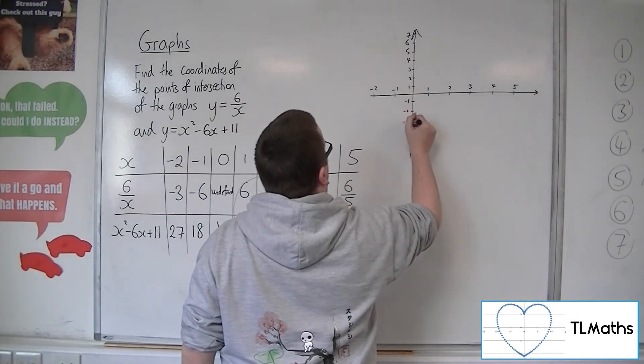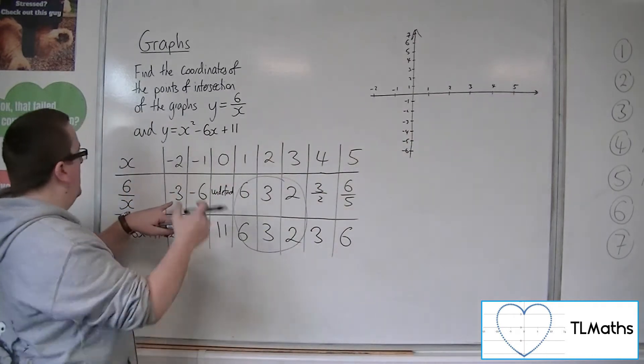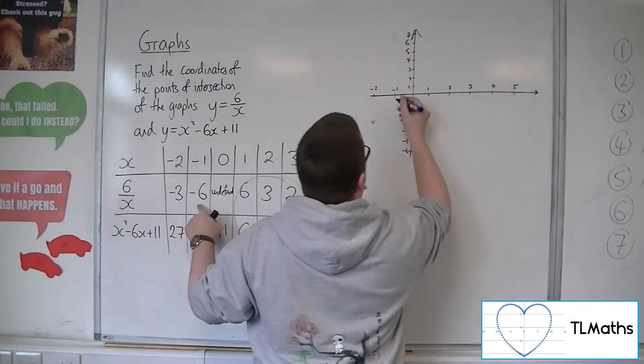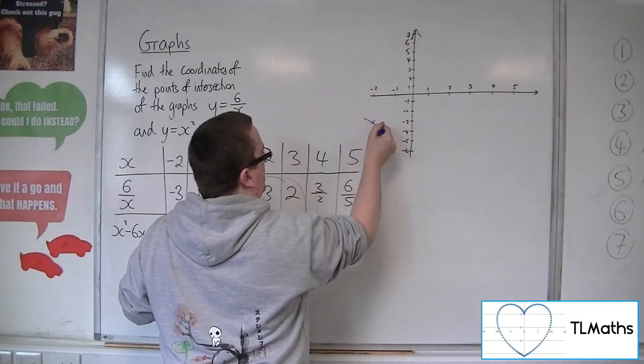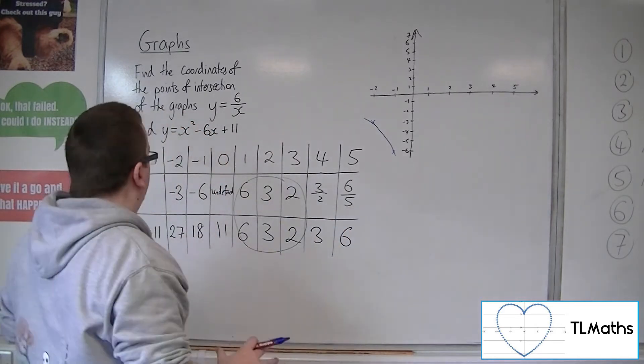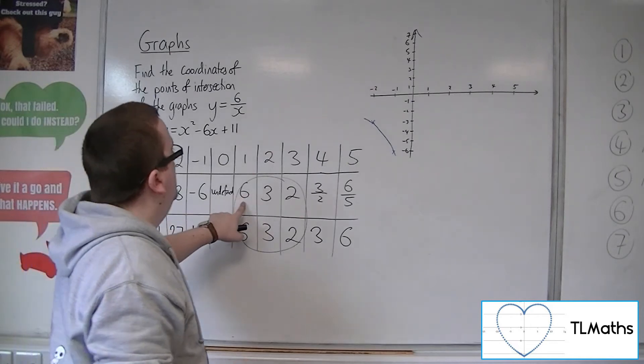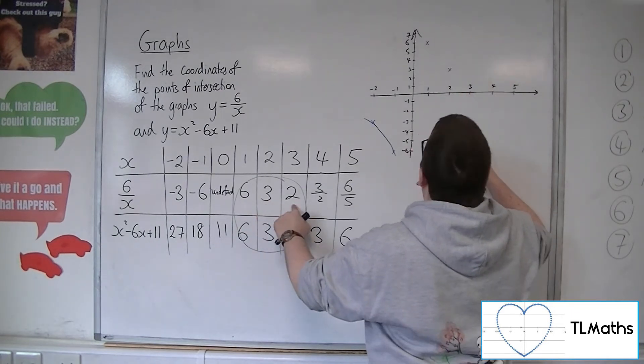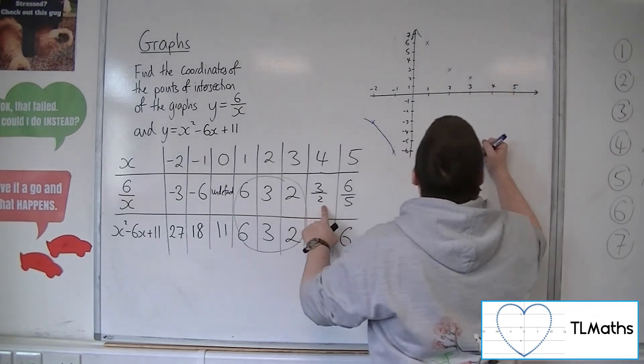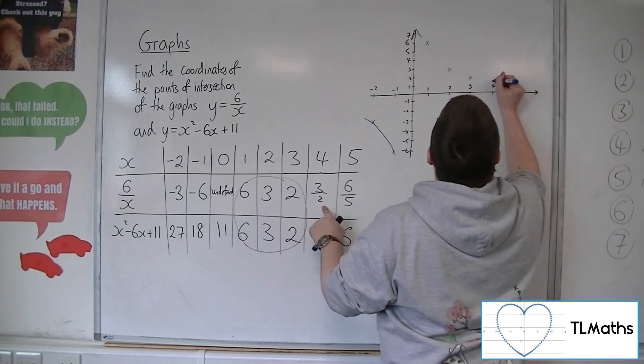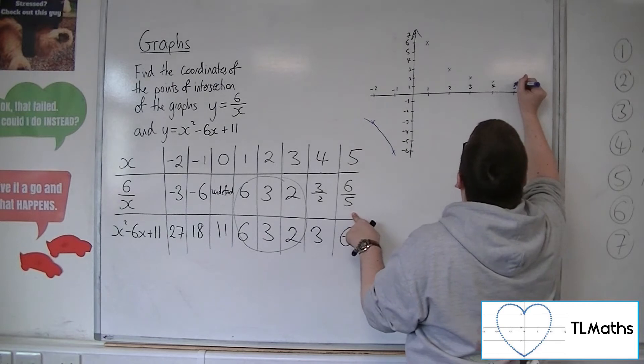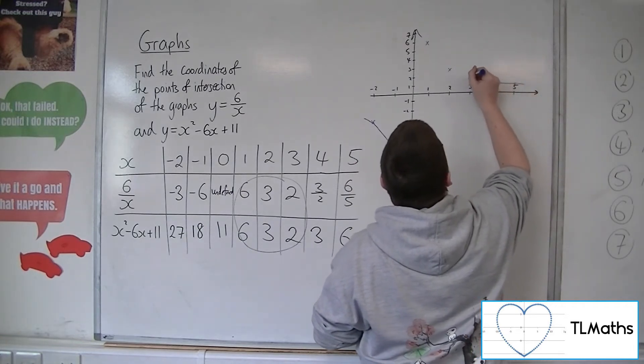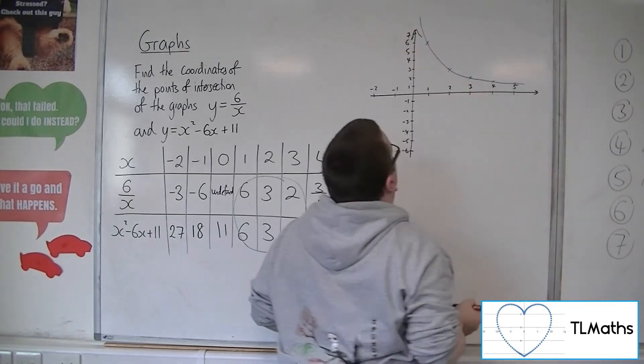Now, let's first of all plot the y equals 6 over x. So we're actually down here for the first couple points, so minus 2, minus 3. And then we're at minus 1, minus 6, which is down here. So we know that the curve should look something like that on that part of the graph. Then we've got the asymptote at x equals 0. Then we're up at 1, 6. We've got 2, 3. We've got 3, 2. We've got 4, 3 halves, which is a little bit tricky for me to draw. And then 5, 6 fifths, so a little bit over 1. So this curve will be doing something like that.